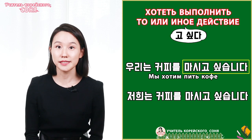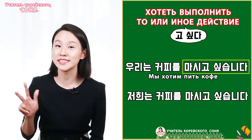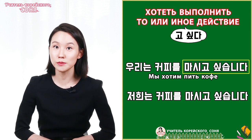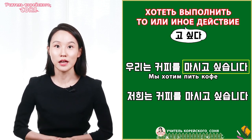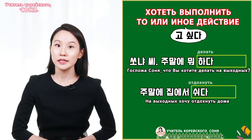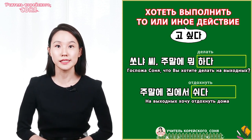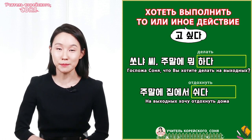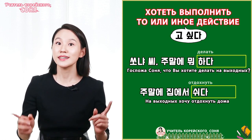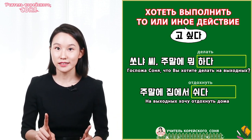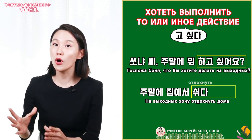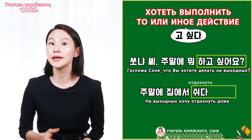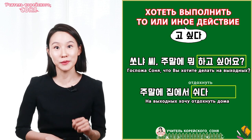И, друзья, если вы не знаете местоимения первого, второго и третьего лица в корейском языке, я под видео в описании оставила ссылочку на видео — вы можете посмотреть. Итак, продолжим упражняться. Как можно спросить: «Госпожа Соня, что вы хотите делать на выходных?» — вежливо. Три-четыре: 소냐 씨 주말에 뭐 하고 싶어요? Так мы говорим. Легко и просто.